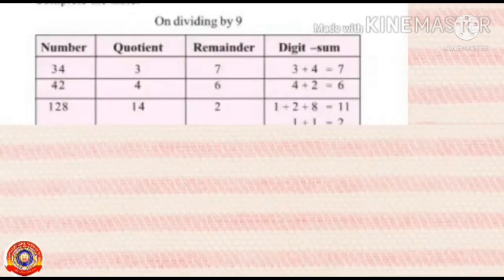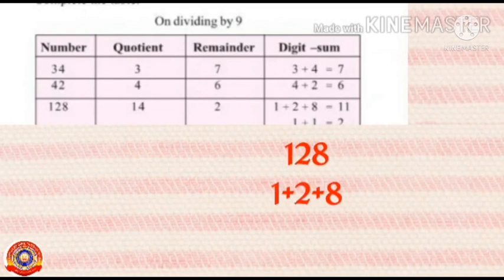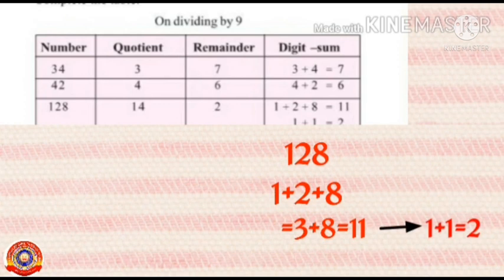Next 128, to find its remainder, just add the digits in 128. That means 1 plus 2 plus 8. 1 plus 2, 3 plus 8, 11. Students, you know that when a number is to be divided by 9, its remainder should be less than 9. 11 is more than 9. So, again we have to add the digits in 11. That means 1 plus 1 equals 2. So, its remainder is 2.